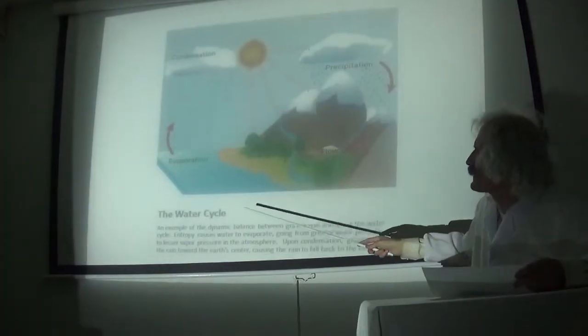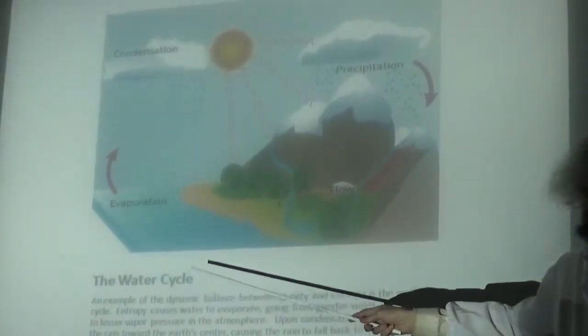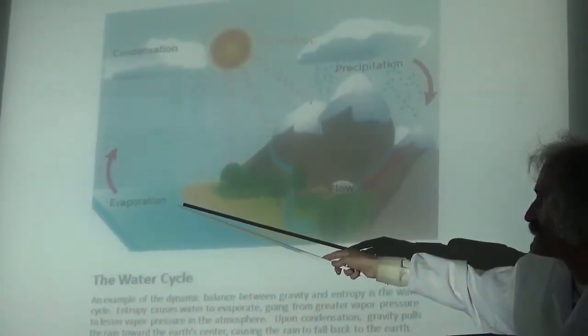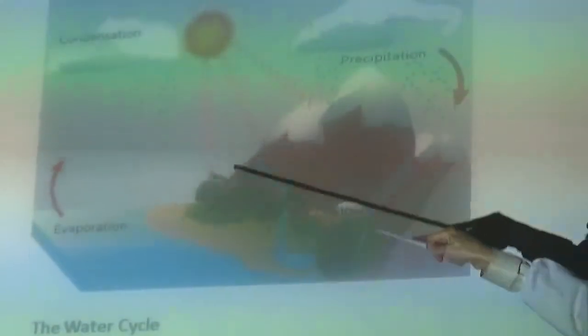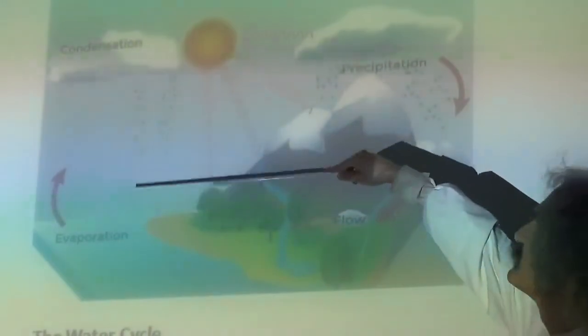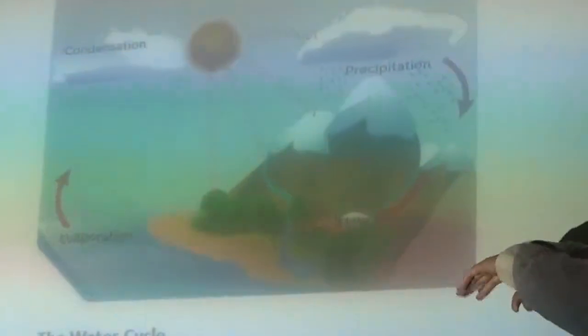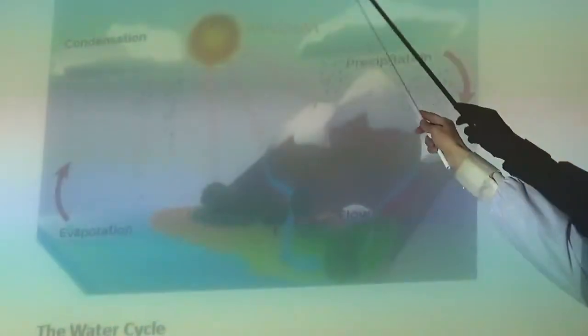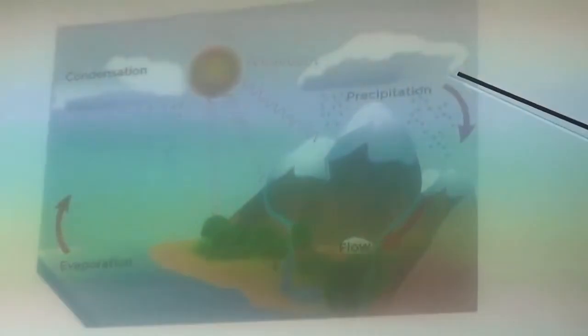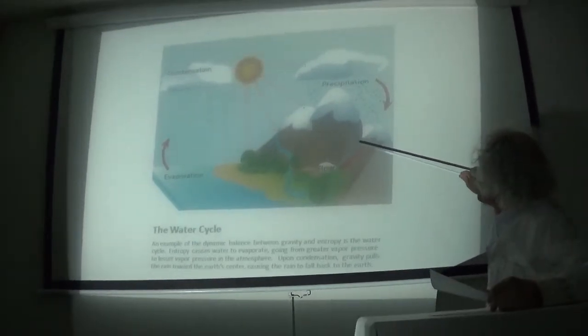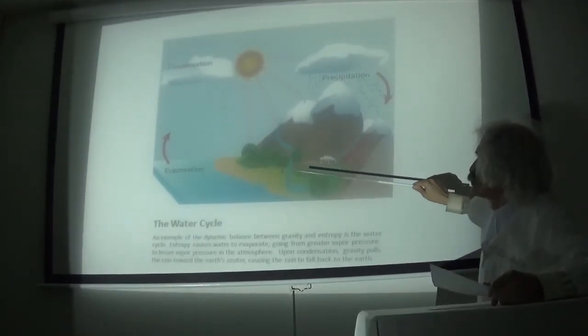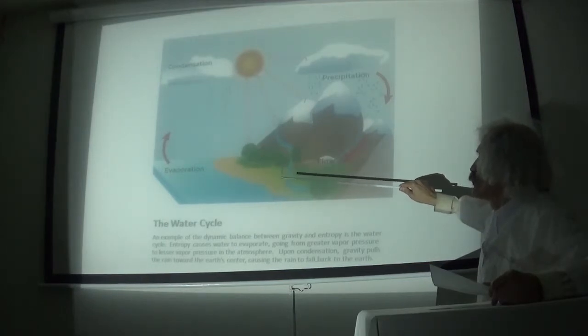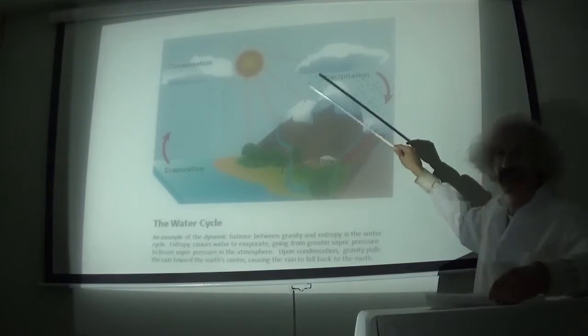Here we see this example. It starts with evaporation. The example is the water cycle. Evaporation causes water to move from an area of greater pressure to lesser pressure in the upper atmosphere - that's entropy. Then we see it condenses and forms into precipitation, which is gravity pulling it back downward, and it flows into rivers and streams. Gravity pulls it farther downward toward the center of the earth, and it goes back into the lake or the ocean, and the cycle starts all over again.